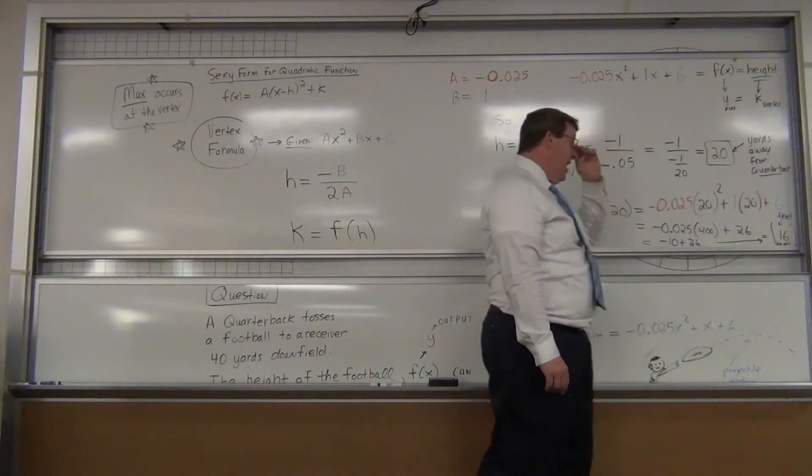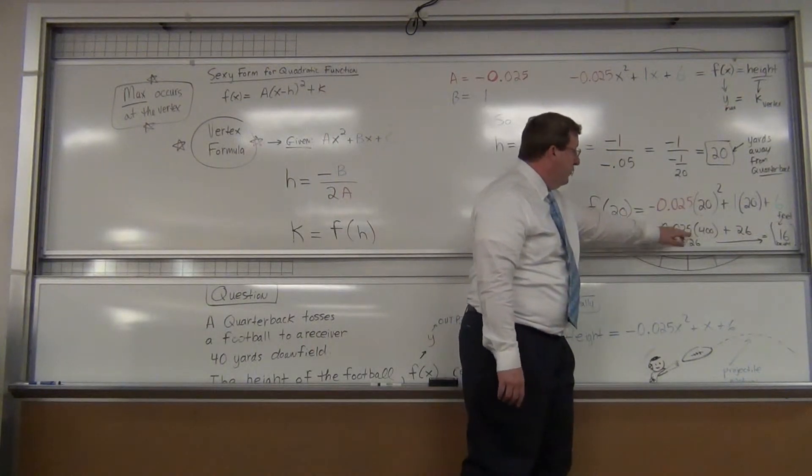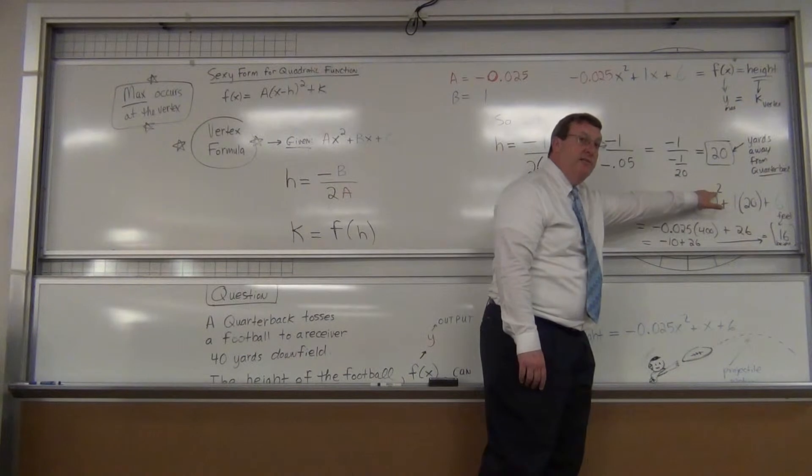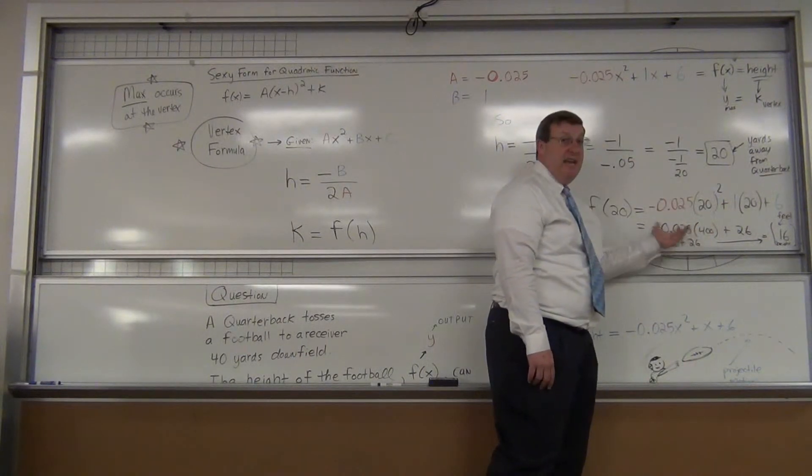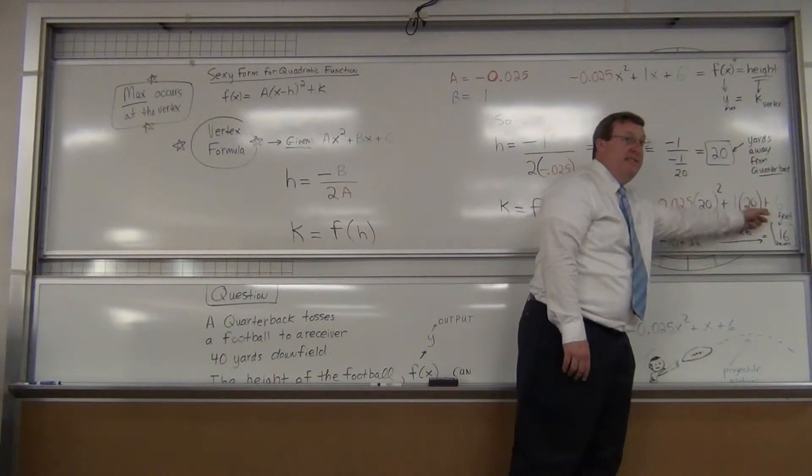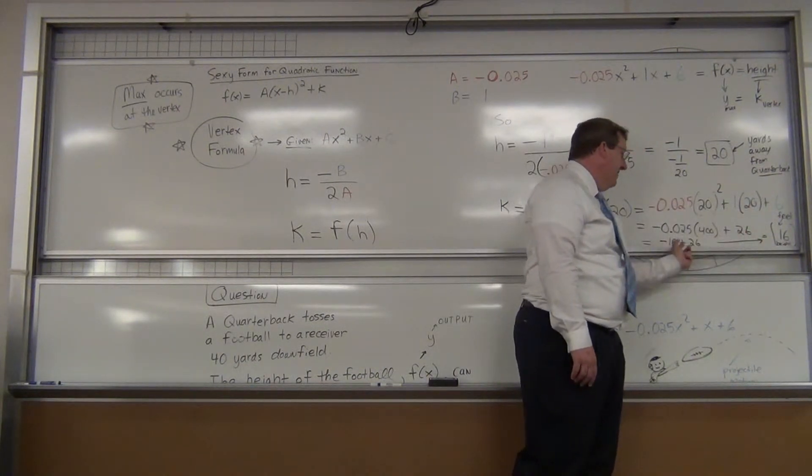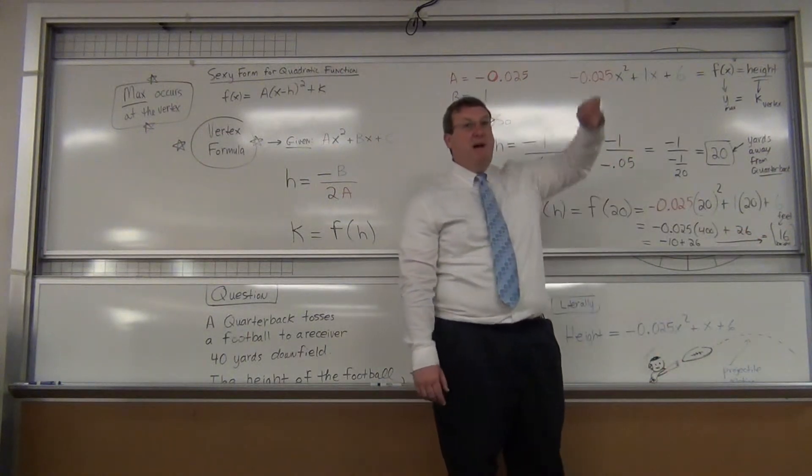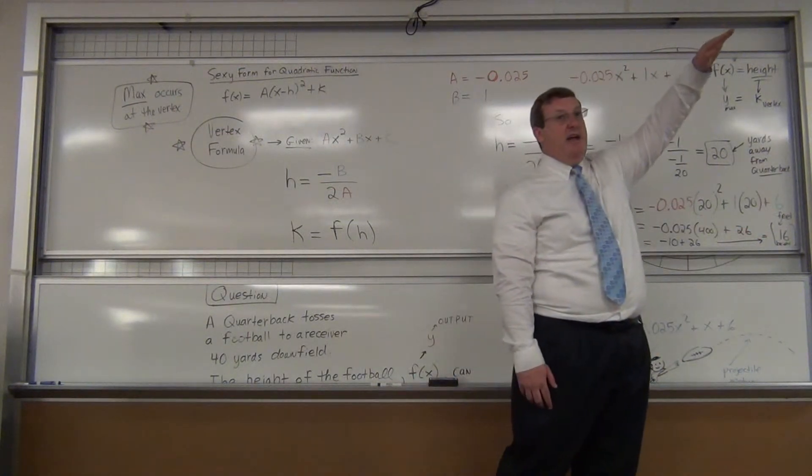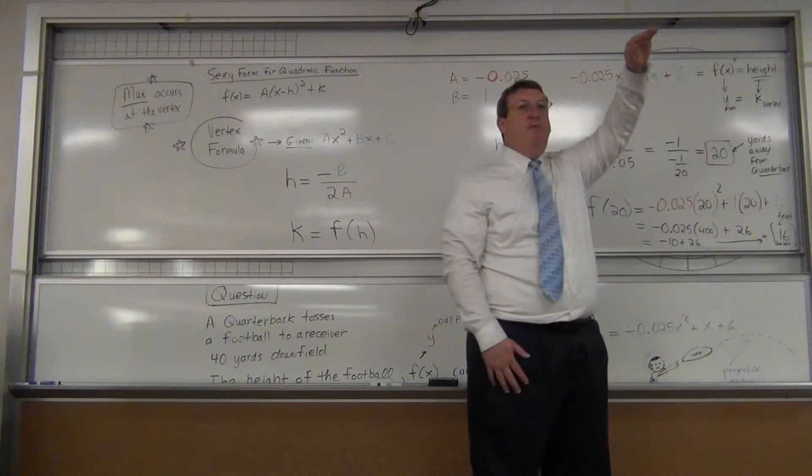You do this math and you're going to find the maximum height. So just doing it quickly: 20 squared is 400 times negative 0.025, that actually equals negative 10, plus 20 plus 6. So there's the 26. Negative 10 plus 26 gives you 16.